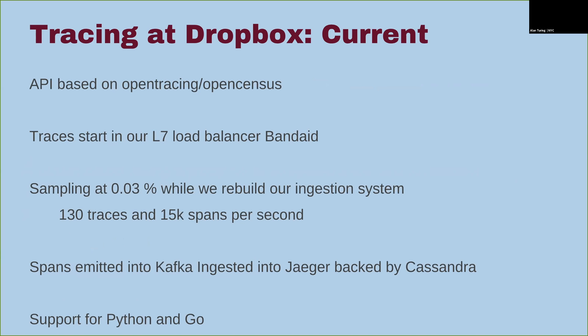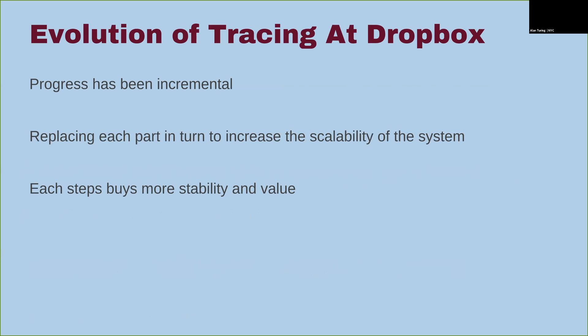Now we have a system based on OpenTracing and OpenCensus. Traces all start in our L7 load balancer Band-Aid, so we have a solid sampling of requests across everything that comes into Dropbox.com. Our current sampling rate is 0.03%, which equates to around 130 traces per second and 15,000 spans per second. These spans are emitted into Kafka and then ingested into Jaeger backed by Cassandra. Right now we only support Python and Go, which are our tier-one languages.